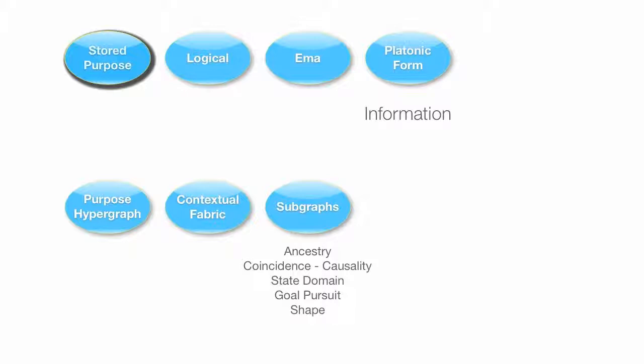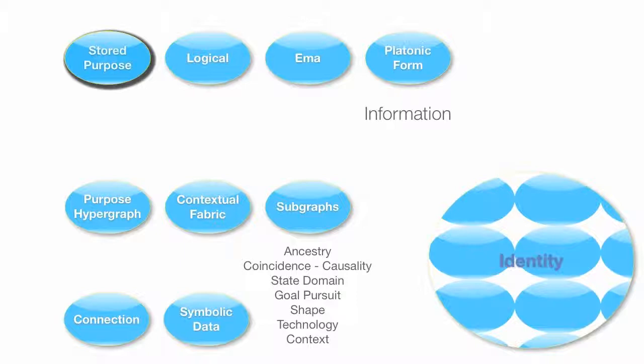And we've got them for ancestry that might make a plank the ancestor of a door, coincidence and causality, the turning of the handle preceding the opening of a door, state domains and goal pursuit which define boundary conditions and the methods of connecting technology to those boundary transitions. And then shape graphs, which are key for putting something like the shape of a door in a mind, or the progression of a play. And then technologies again to link that identity and the alignment of that to the real world and context where all knowledge must be linked to be true knowledge.